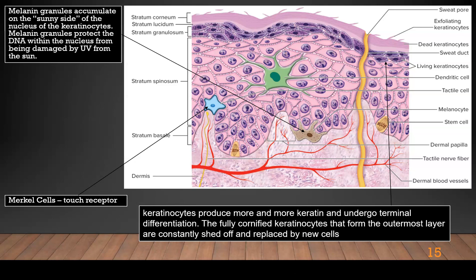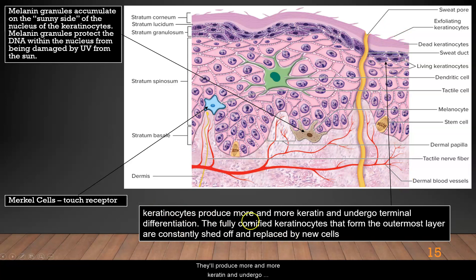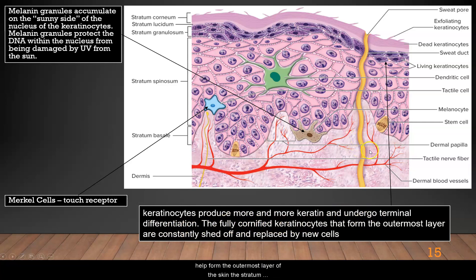Here's what that looks like. The melanocyte's melanin granules will accumulate on the sunny side of the nucleus of keratinocytes, protecting the DNA within from UV radiation damage. Here is a Merkel cell, which is a touch receptor. The keratinocytes produce more and more keratin and undergo terminal differentiation, becoming fully cornified keratinocytes that form the outermost layer of the skin — the stratum corneum — and are constantly shed off and replaced by new cells.